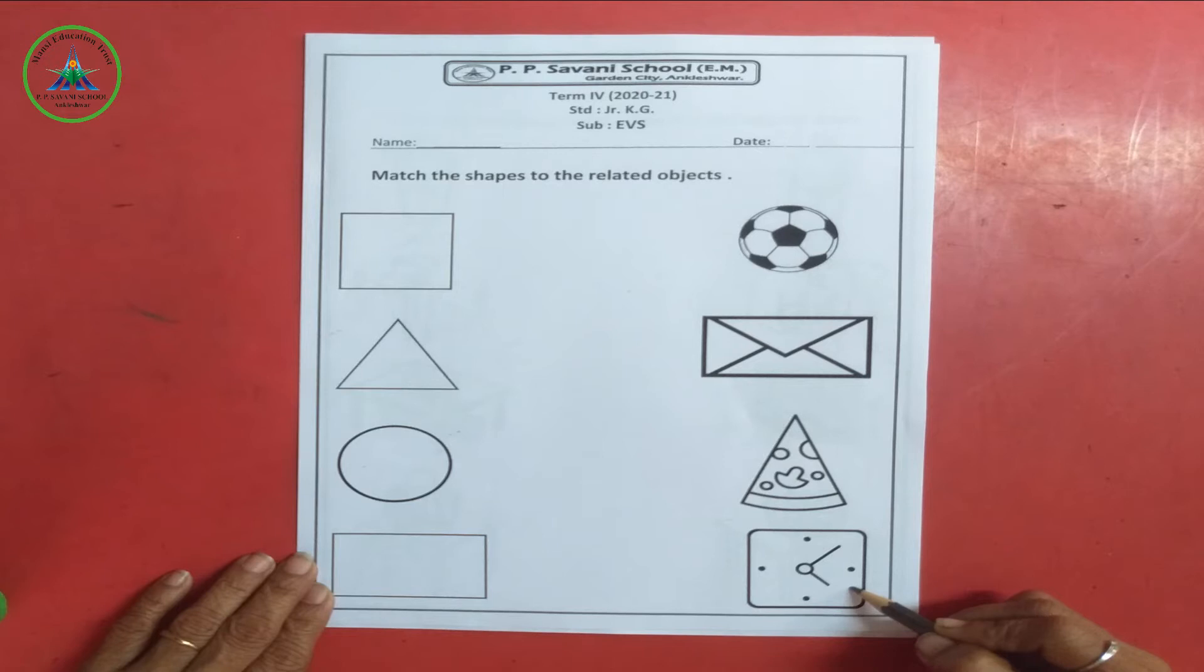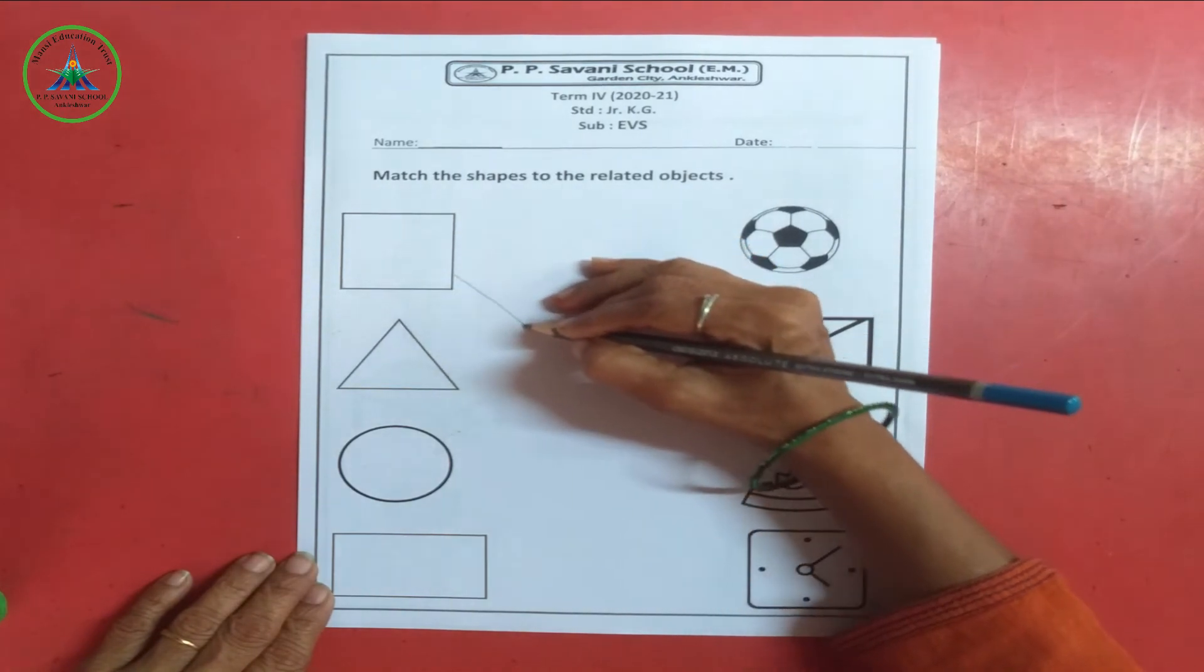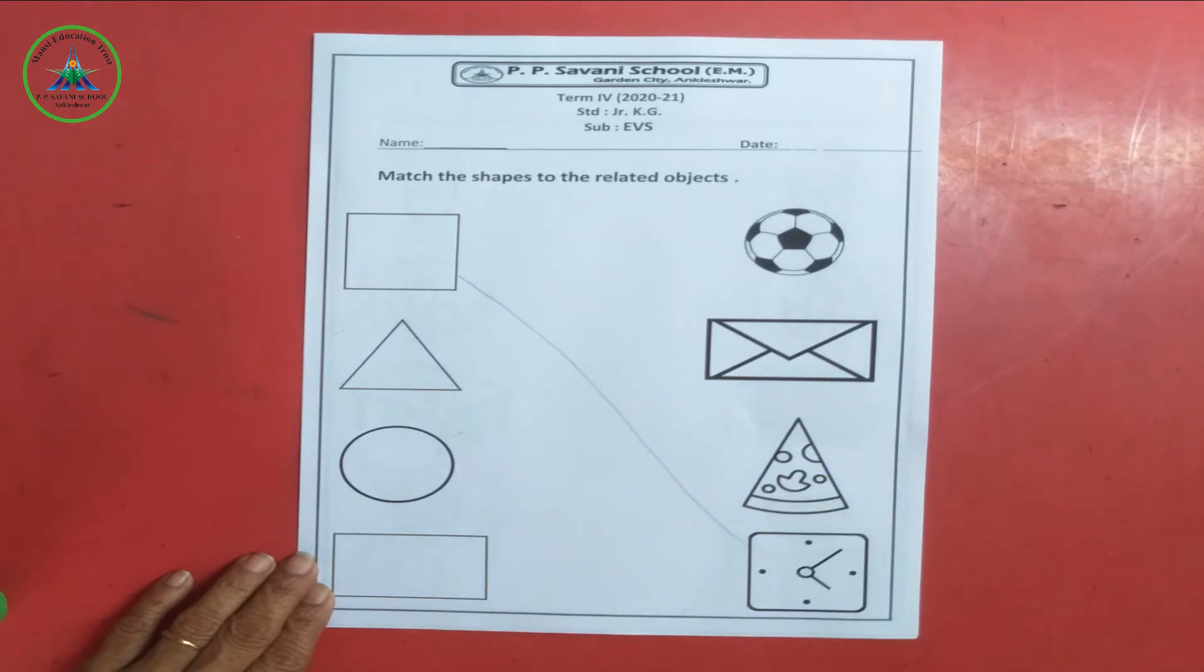So my dear kids. This is a clock. Clock shape is square. So we will match square shape with clock. Okay.